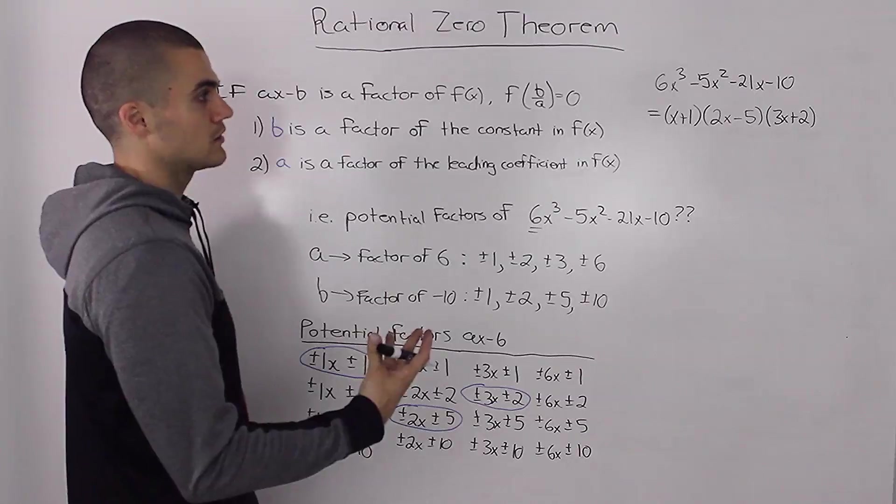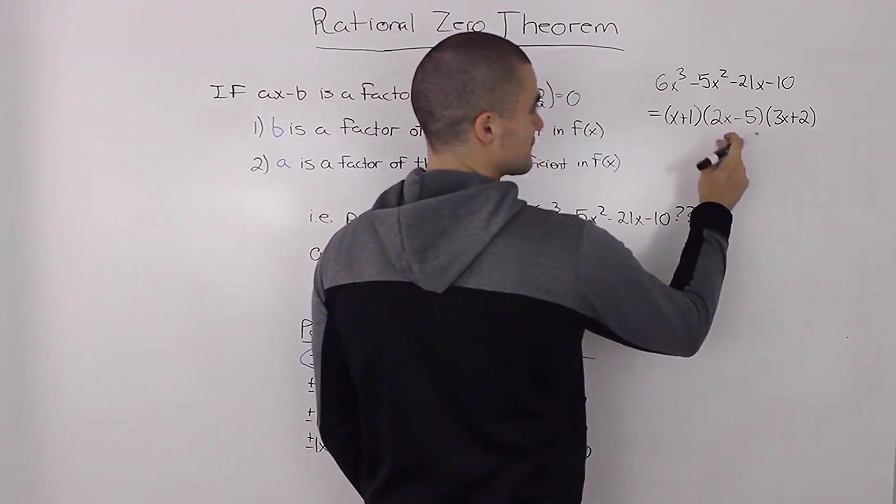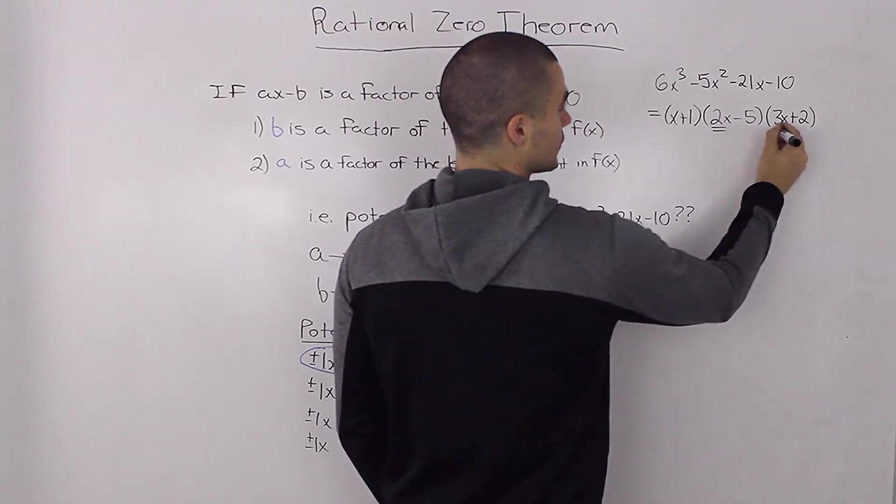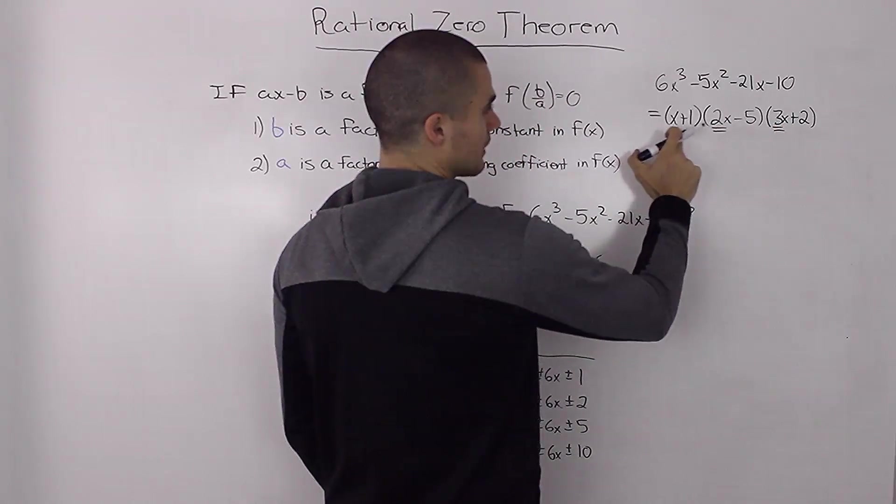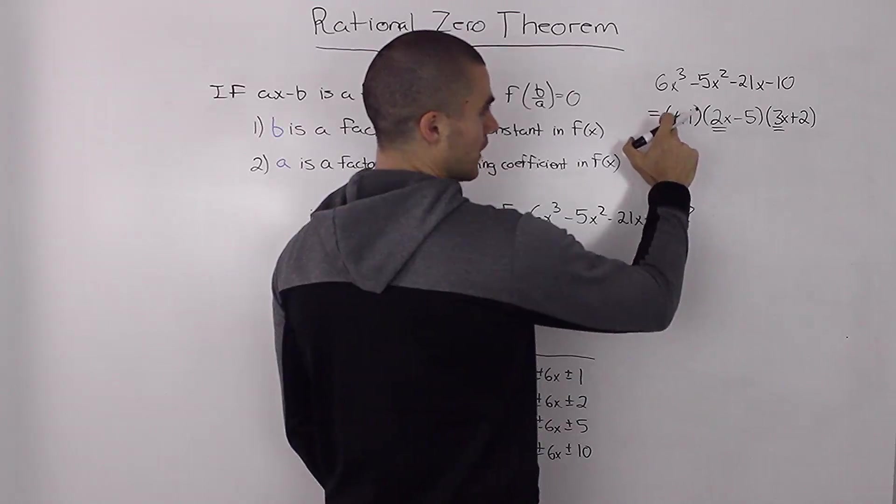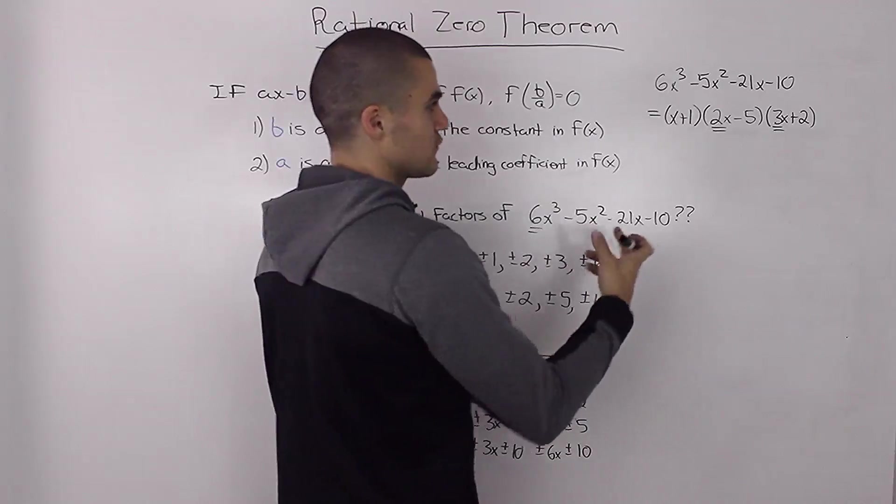This theorem is pretty useful, though, once we get into factoring polynomials, and when we're dealing with these factors that have an a value other than 1. So when the a value is 1, like here, this 1x + 1, those kinds of factors are easier to find.